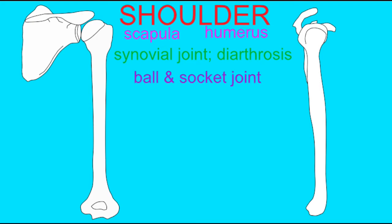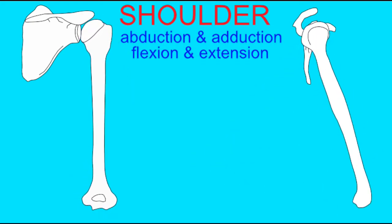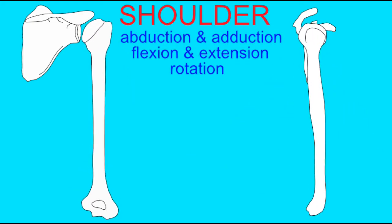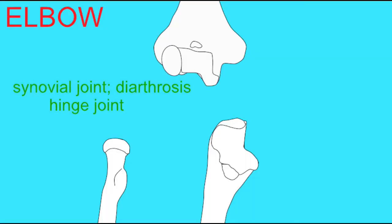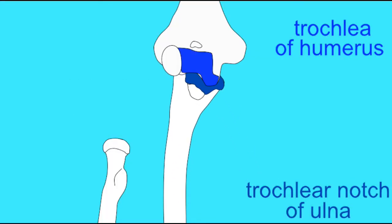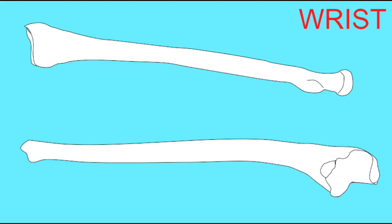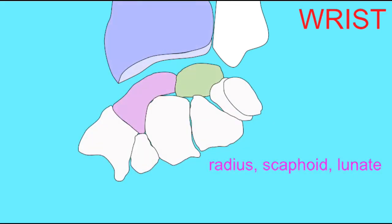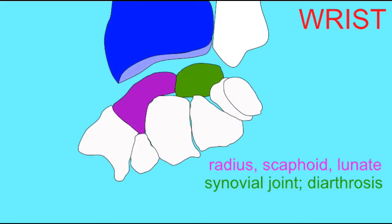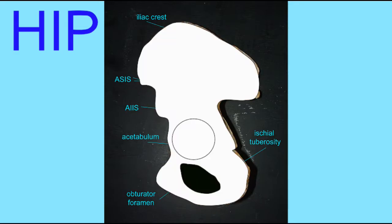One could also then refer to individual bones. So on the humerus, the proximal end is where it attaches at the shoulder, and its distal end is where it attaches at the elbow. For the bones of the forearm, their proximal end is their attachment point at the elbow, and their distal end would be at the wrist.